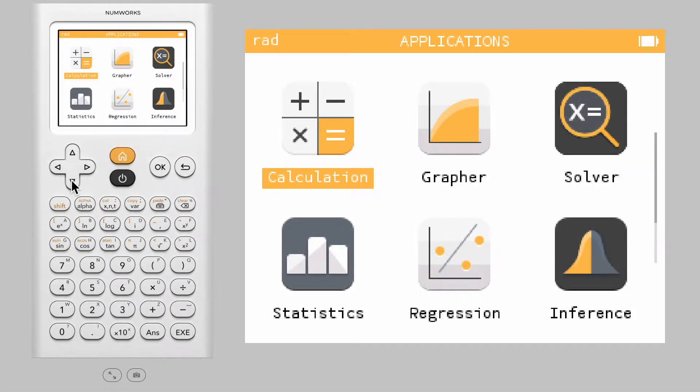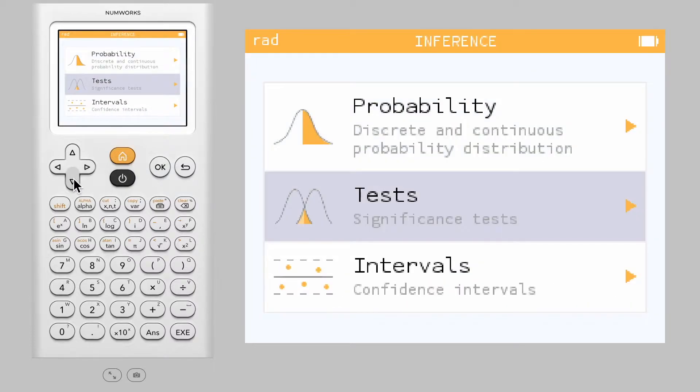Today we are going to learn how to construct a confidence interval using two samples on the NumWorks graphing calculator. To begin, enter the inference application and select Intervals.